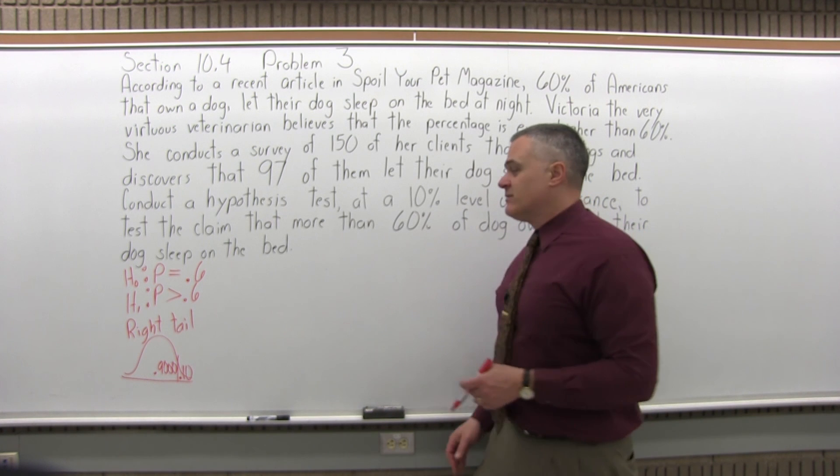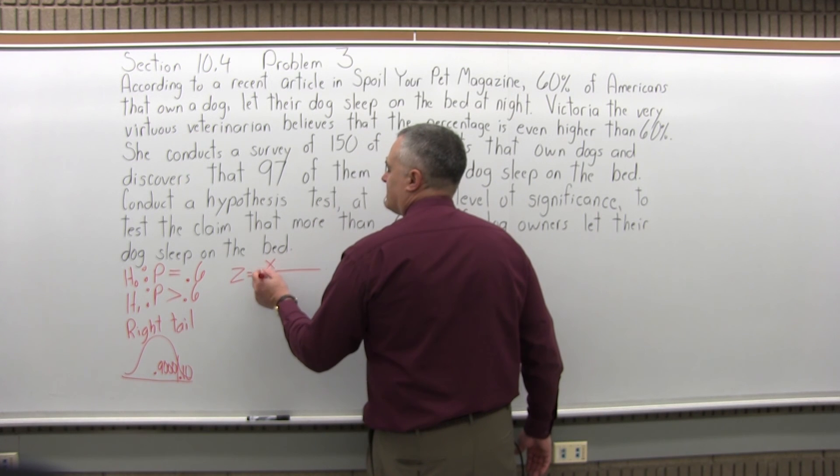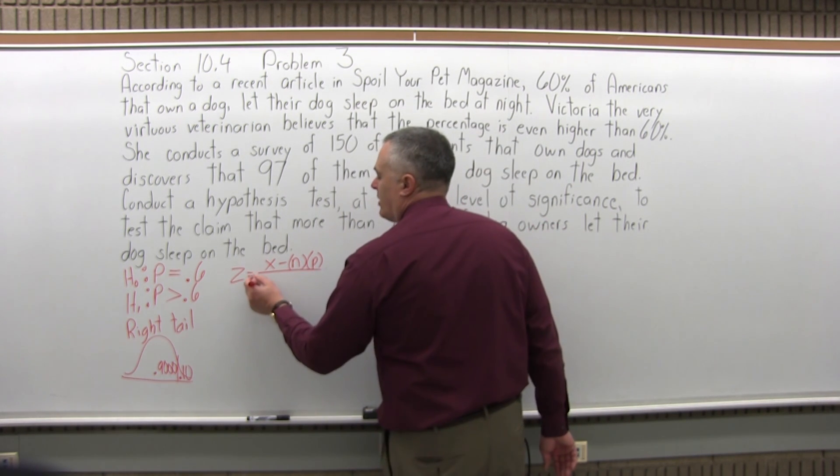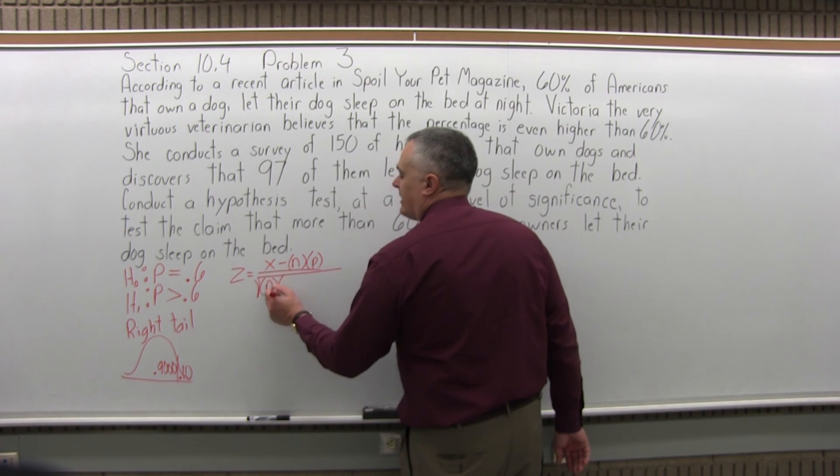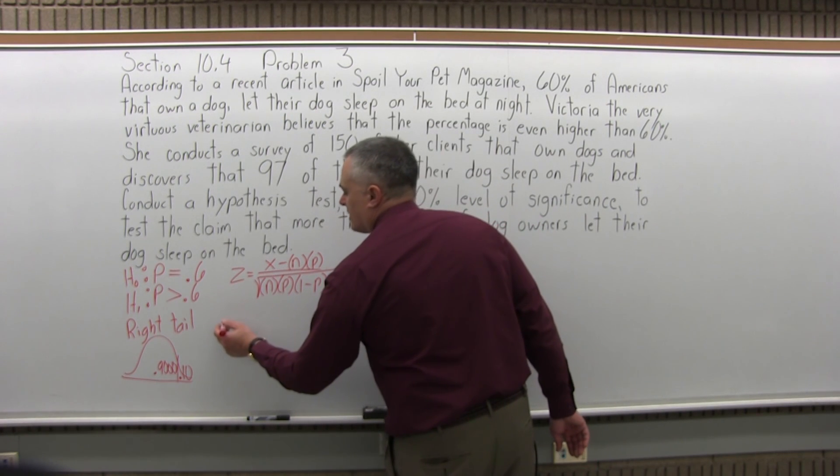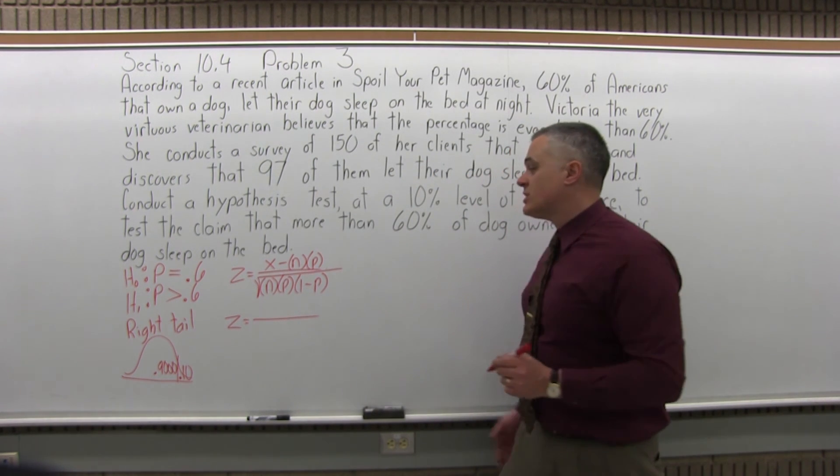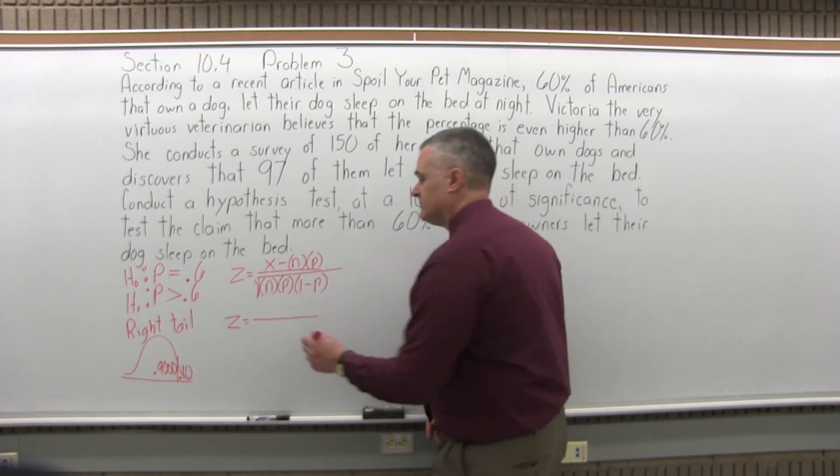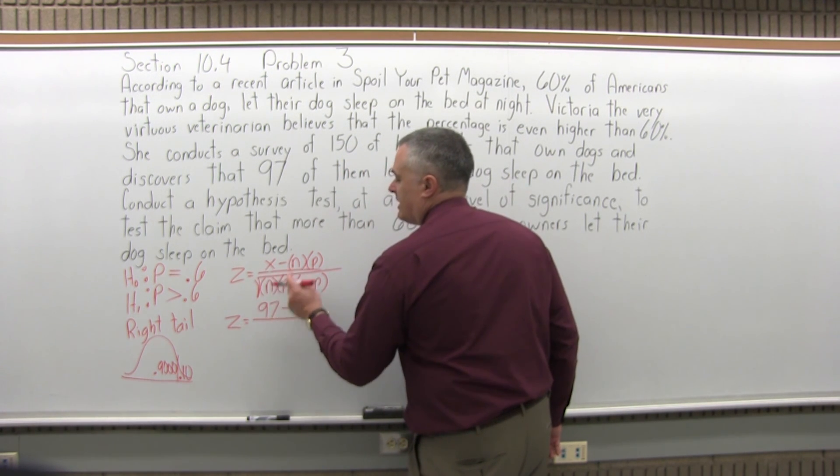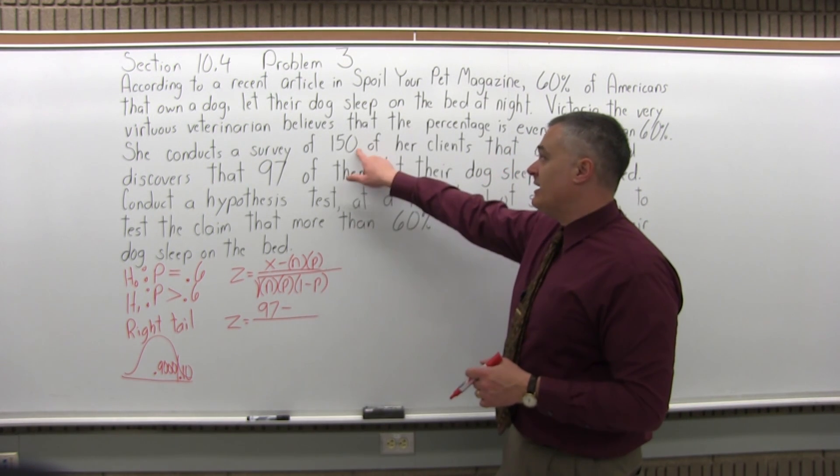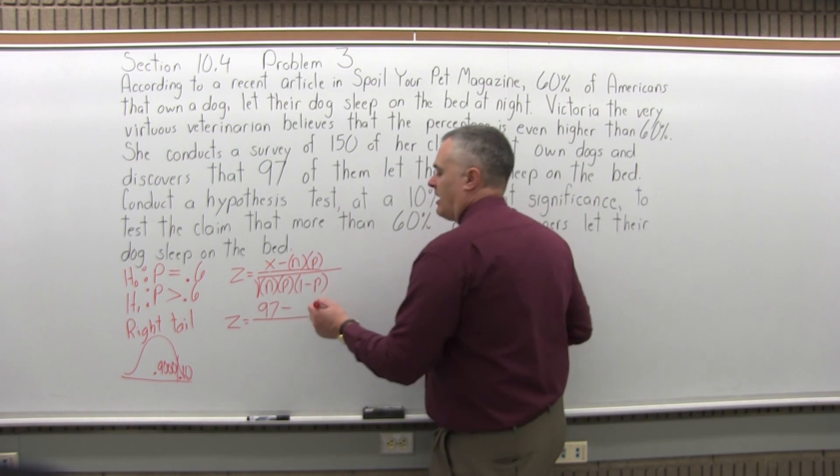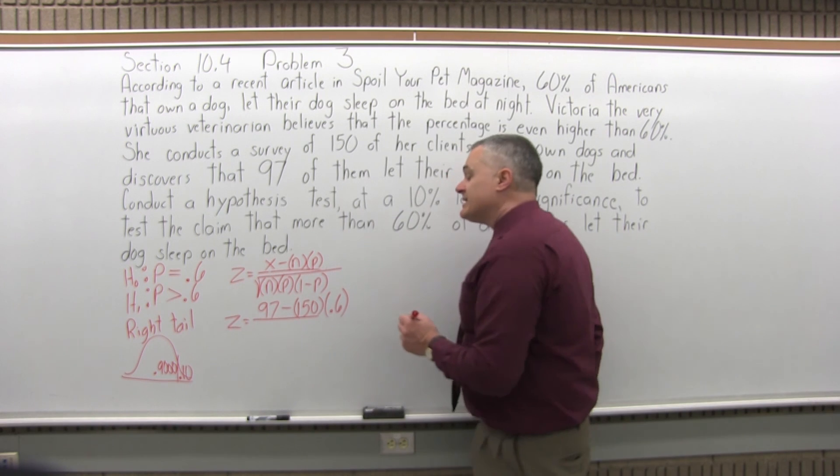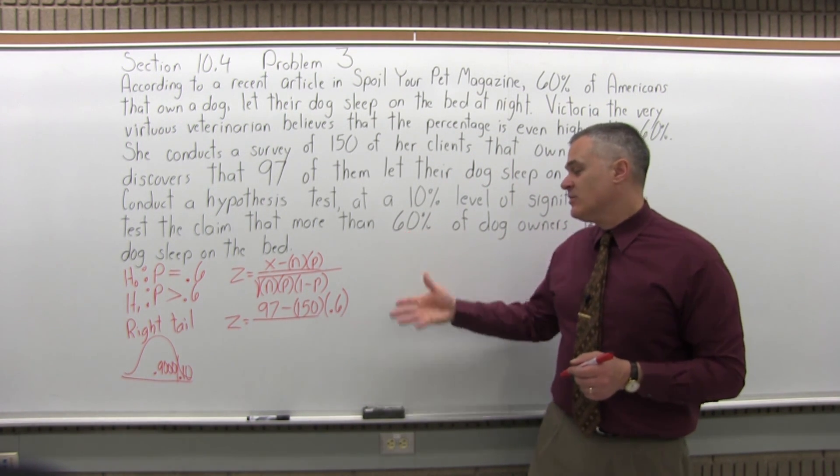The next step is calculate the value for z. The formula for z is z equals x, the observed number of successes, minus n times p (n is your sample size, and p is your proportion that you're testing), over the square root of n times p times 1 minus p. So, let's fill that in. z equals, x, our observed number of successes in this problem is 97. We have minus n times p, so n, the size of the sample, for this problem is 150. There were 150 people tested. That's going to be multiplied times p as a decimal, that 60% is your p, it goes in as 0.6.